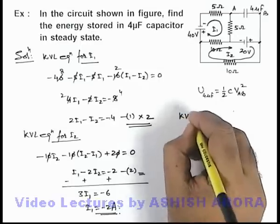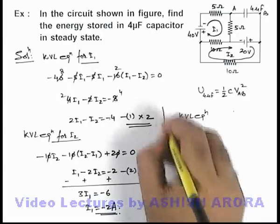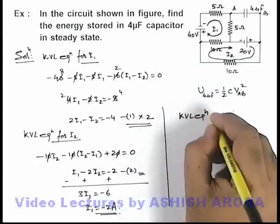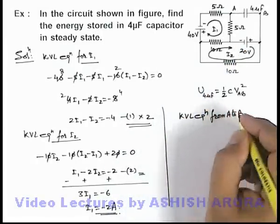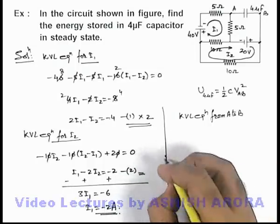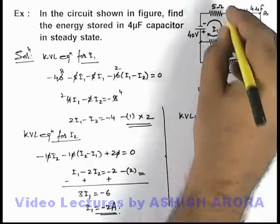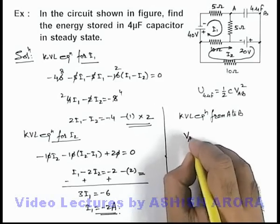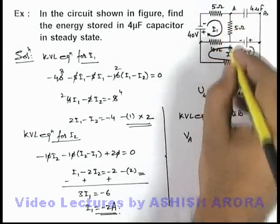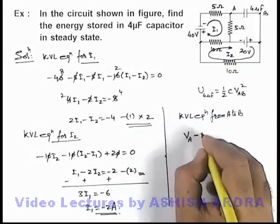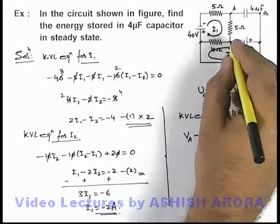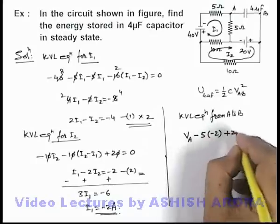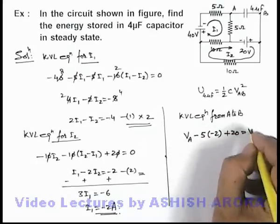So here we write KVL equation separately from a to b. From point a we start, the potential Va, then in this direction it will be minus 5i1, i1 we are given with minus 2 ampere, and then it is gain of 20 volt potential, then it equals Vb.